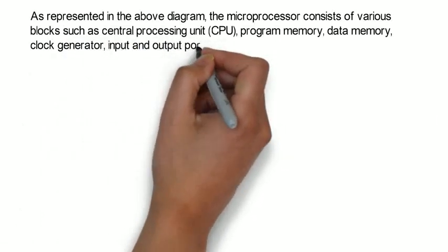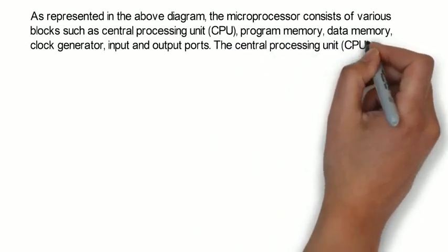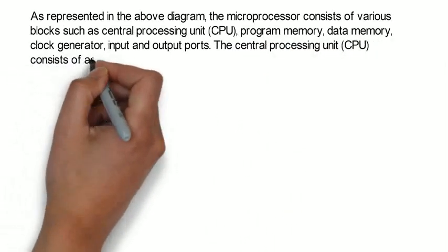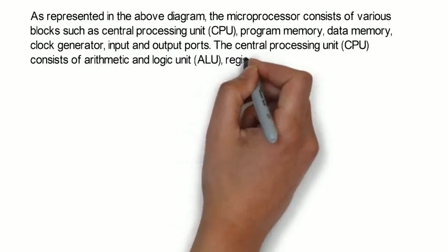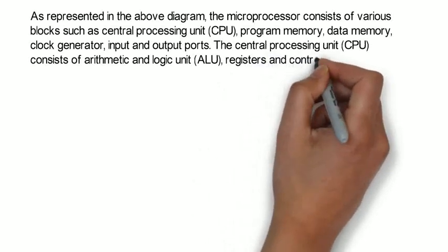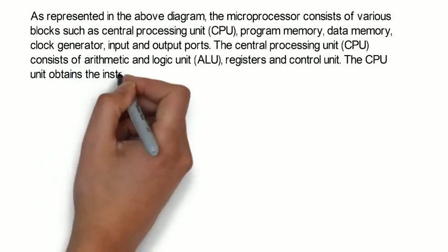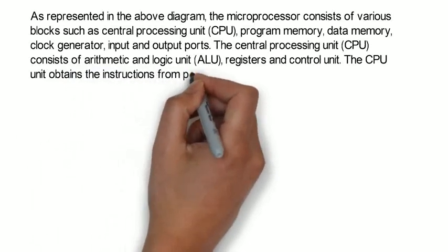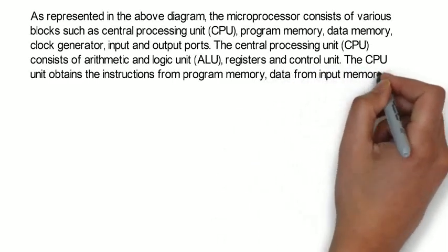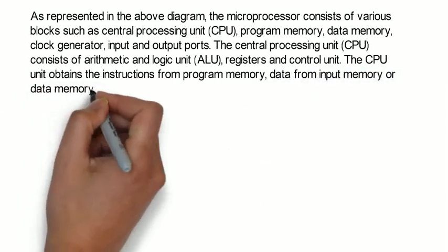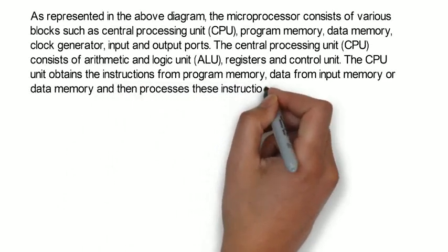The central processing unit CPU consists of arithmetic and logic unit ALU, registers and control unit. The CPU unit obtains the instructions from program memory, data from input memory or data memory and then processes these instructions in a systematic manner and sequence.